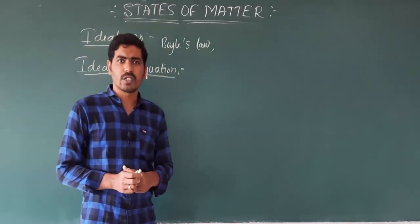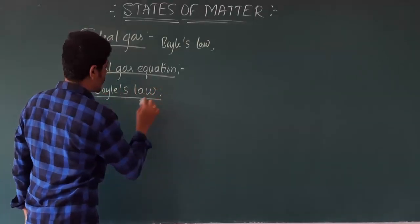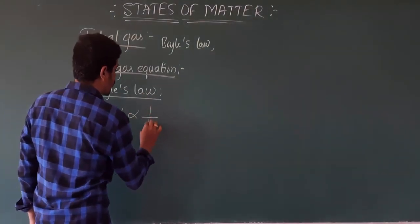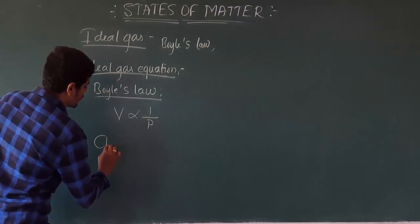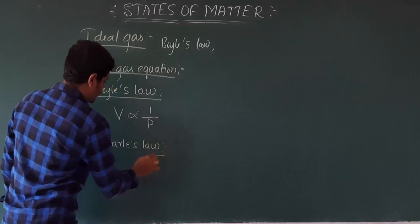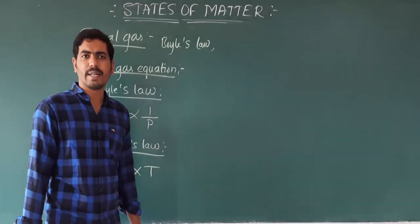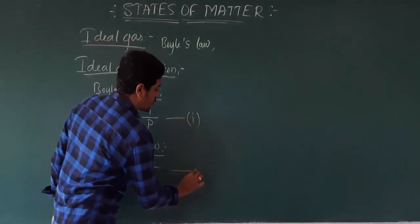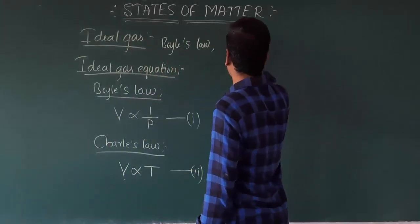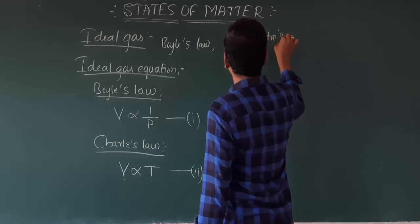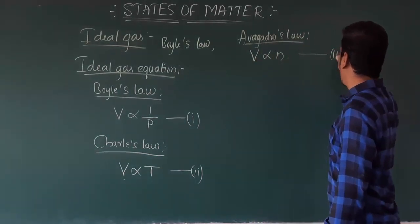According to Boyle's law, volume is inversely proportional to pressure — call this equation 1. According to Charles's law, volume is directly proportional to temperature — call this equation 2. According to Avogadro's law, volume is directly proportional to number of moles — call this equation 3.